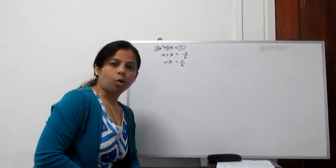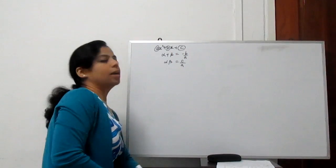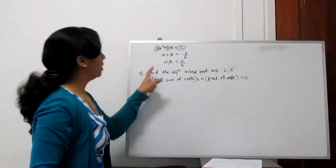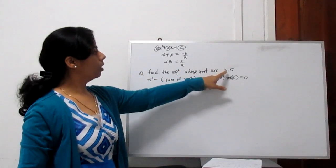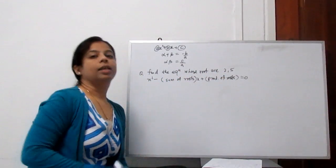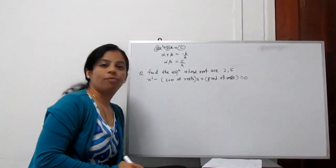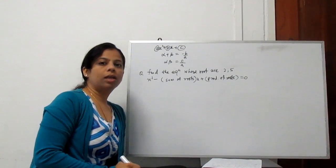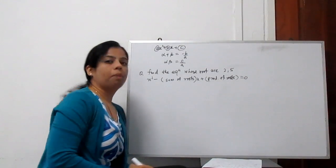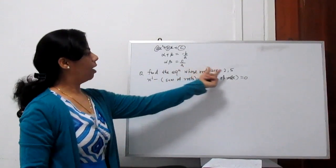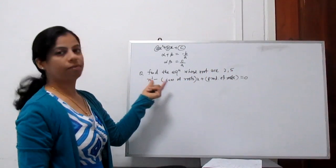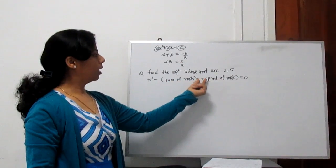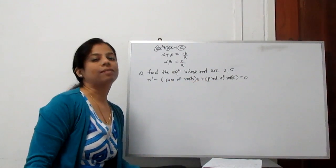Now we proceed to some more complicated examples on this topic. The first question is: find the equation whose roots are 2 and 5. They give the values of alpha and beta and we need to form a quadratic equation. We learned in part 1 that if we have two roots, the equation is formed as x² minus (sum of roots)x plus (product of roots) equals 0.